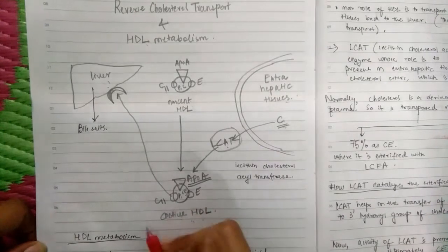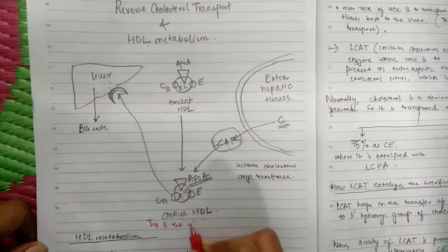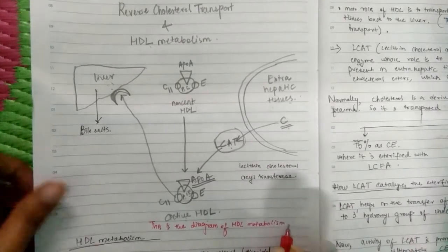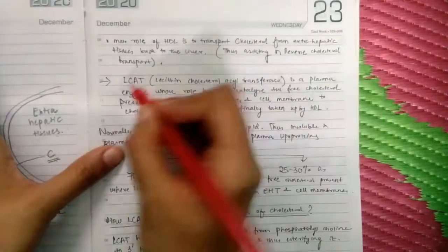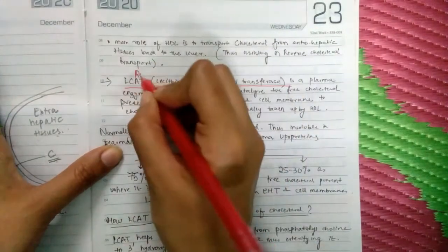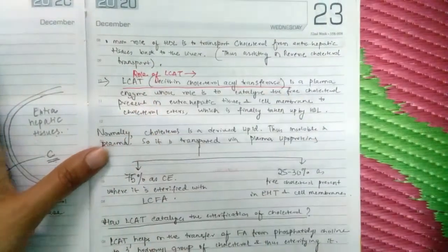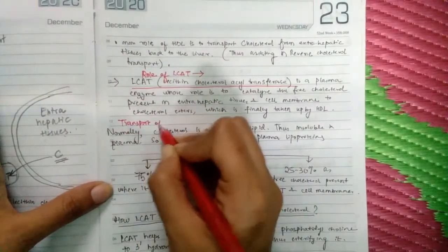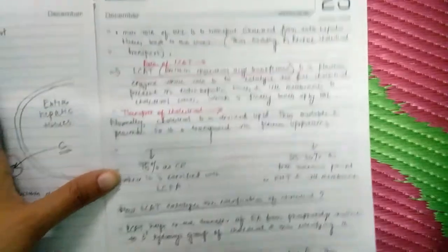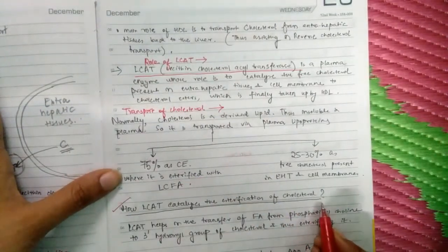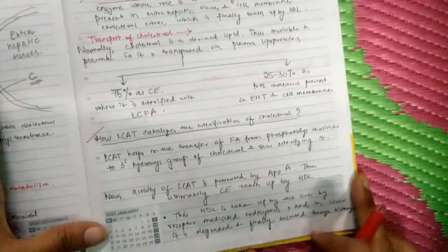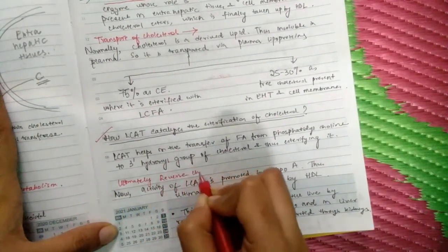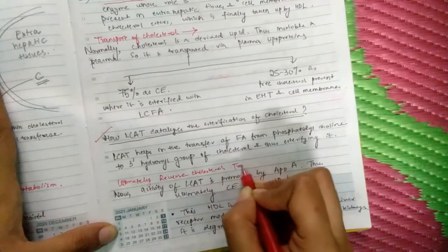Under this diagram we will mention that this is the diagram of HDL metabolism. We will also underline the role of LCAT and give headings, because in our exams we should give headings. This is the transport of cholesterol, how LCAT catalyzes the esterification of cholesterol, and this is ultimately the reverse cholesterol transport.